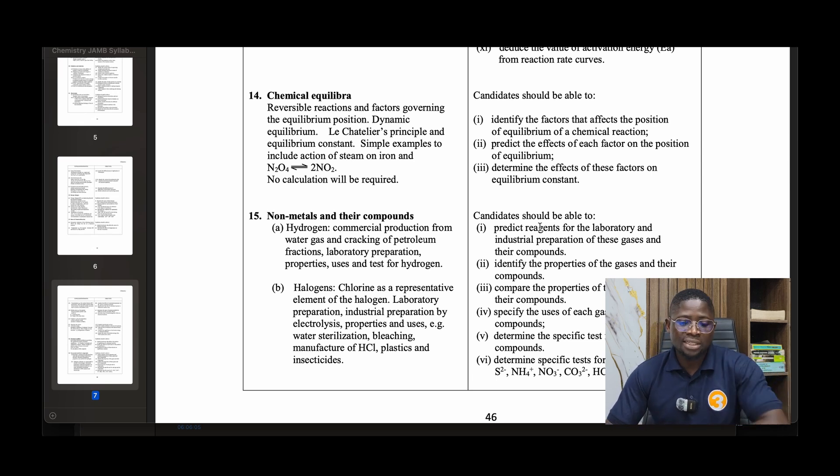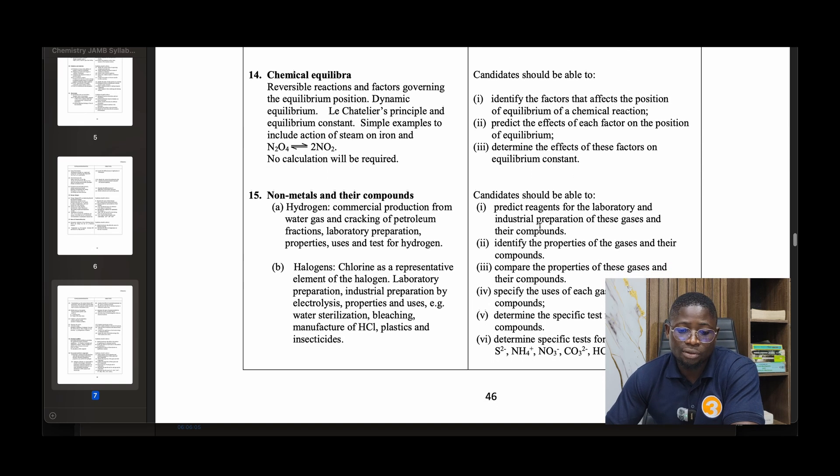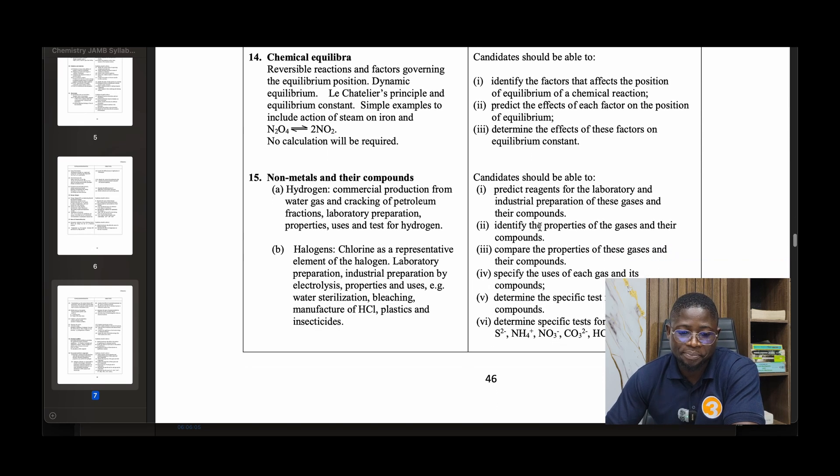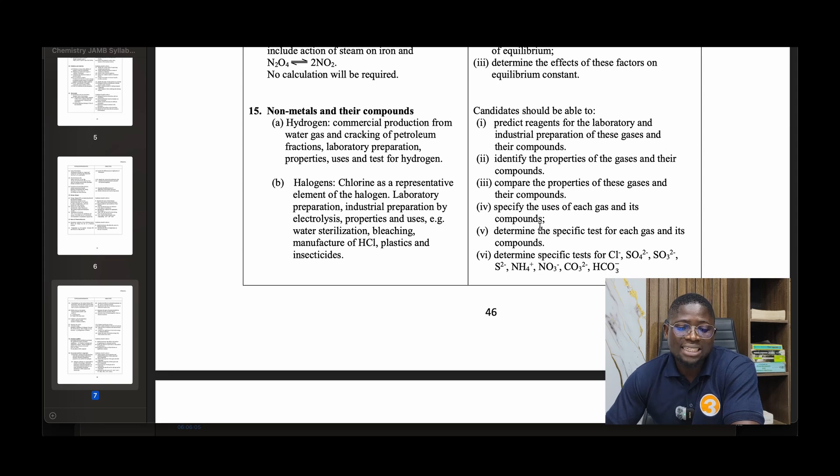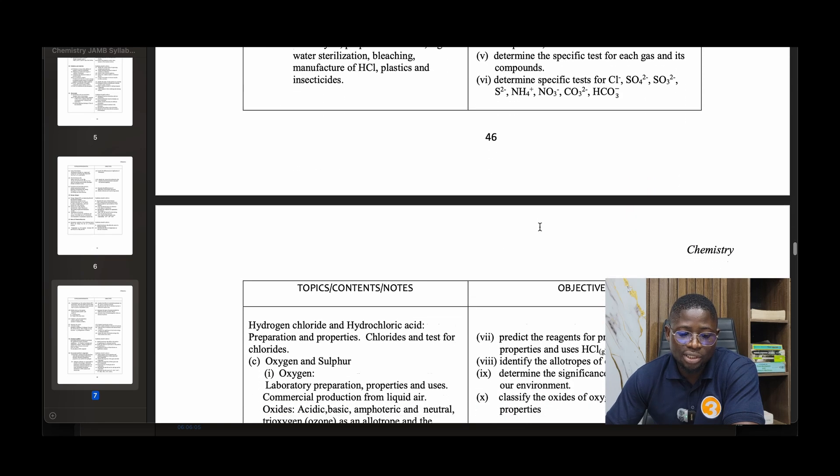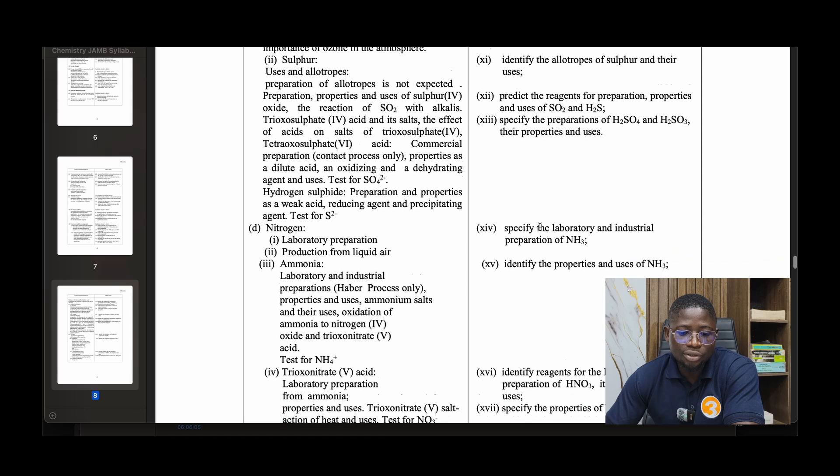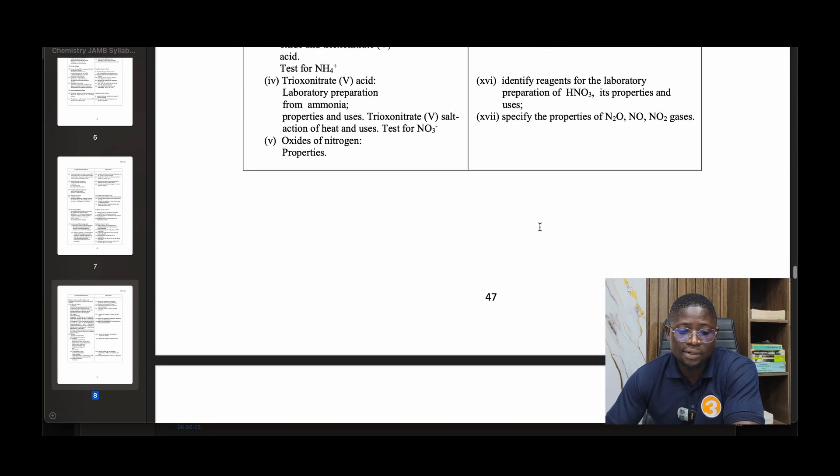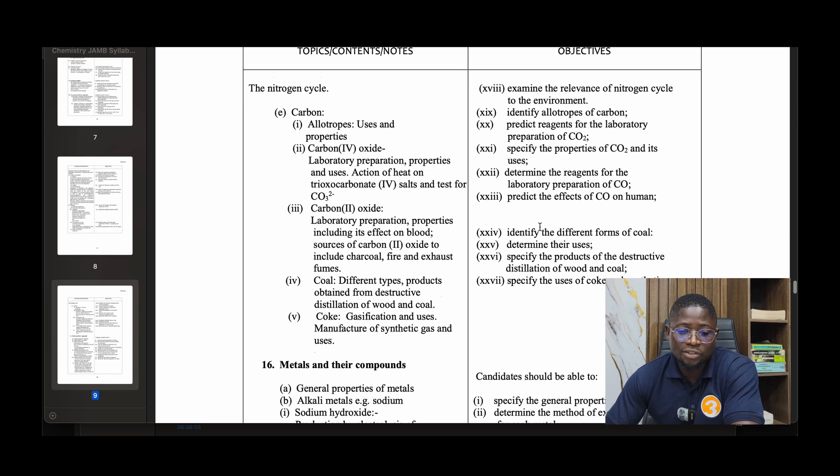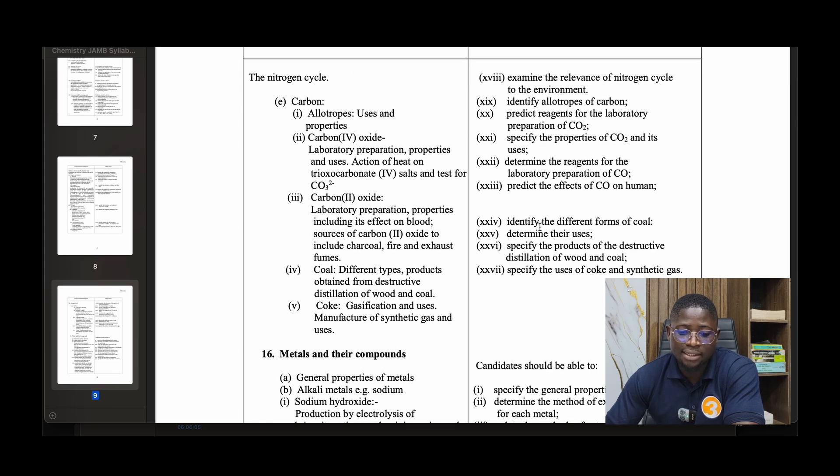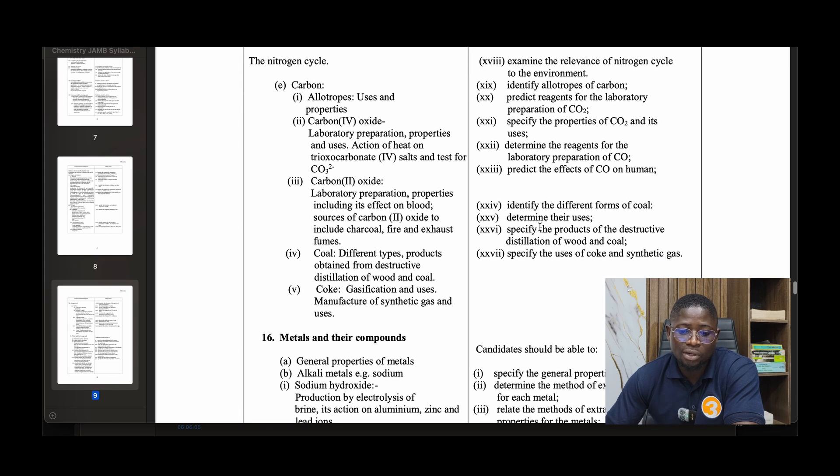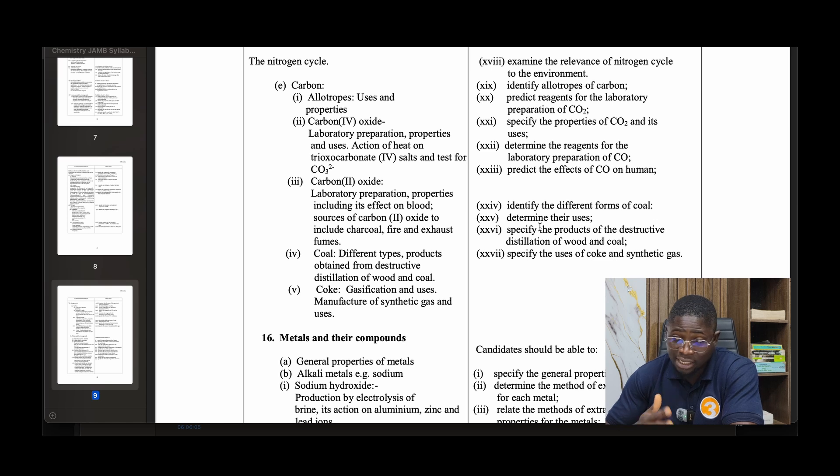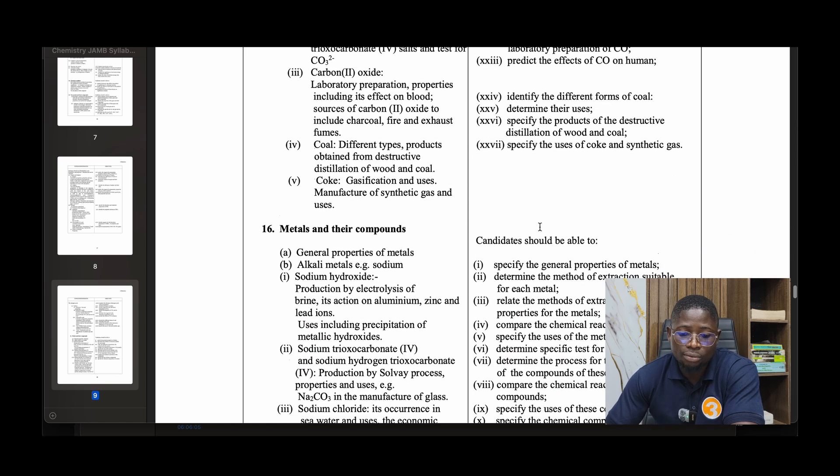Number fifteen: State of chemical equilibrium. Reversible reactions and factors governing the equilibrium position. Dynamic equilibrium, Le Chatelier's principle, and equilibrium constant. Simple examples include action of steam on iron. No calculation will be required in this part. Number sixteen: Non-metals and their compounds - hydrogen, halogens, oxygen and sulfur, nitrogen, trioxonitrate(V) acid, oxides of nitrogen, the nitrogen cycle, and the like.